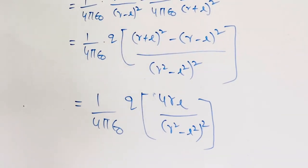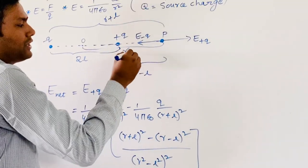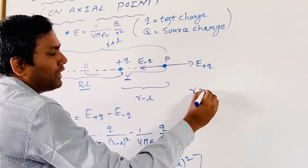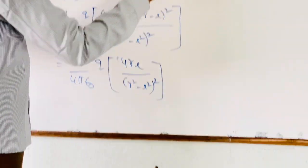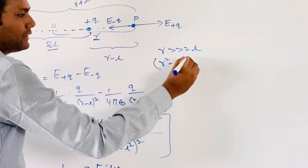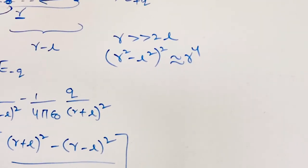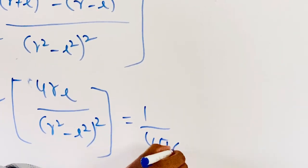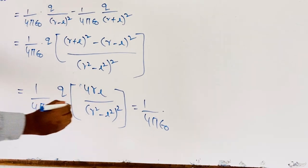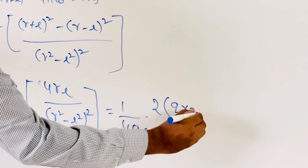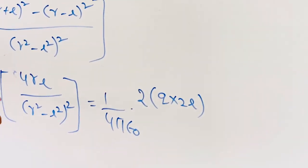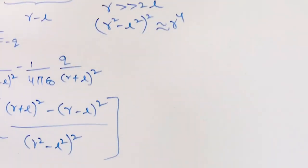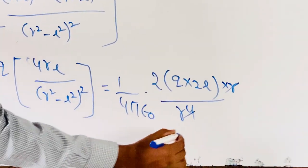Suppose we are taking the dipole as short. What do we mean by a short dipole? A short dipole means R is much greater than 2L. When R is much greater than 2L, then (R square minus L square) whole square is approximately equal to R to the power 4. So the denominator becomes R to the power 4, and after cancellation it becomes R cubed.